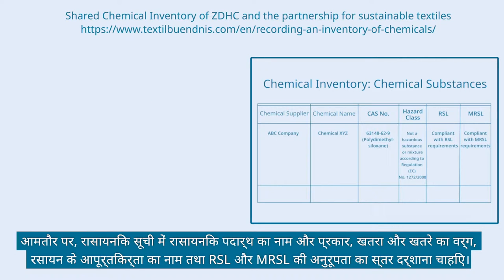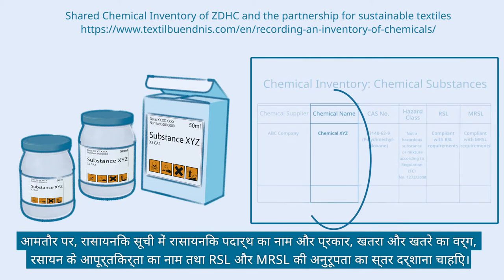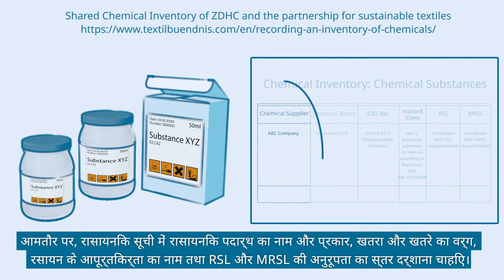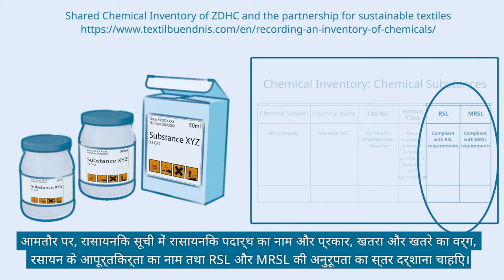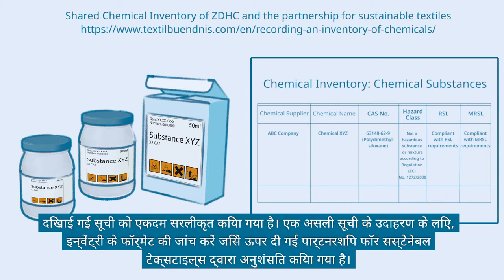Typically, the chemical inventory should indicate the name and type of chemical substance, the hazard and hazard class, the name of the chemical supplier, and the level of conformance to RSL and MRSL. The inventory shown is strongly simplified. For an example of an actual inventory, check the inventory format recommended by the Partnership for Sustainable Textiles above.